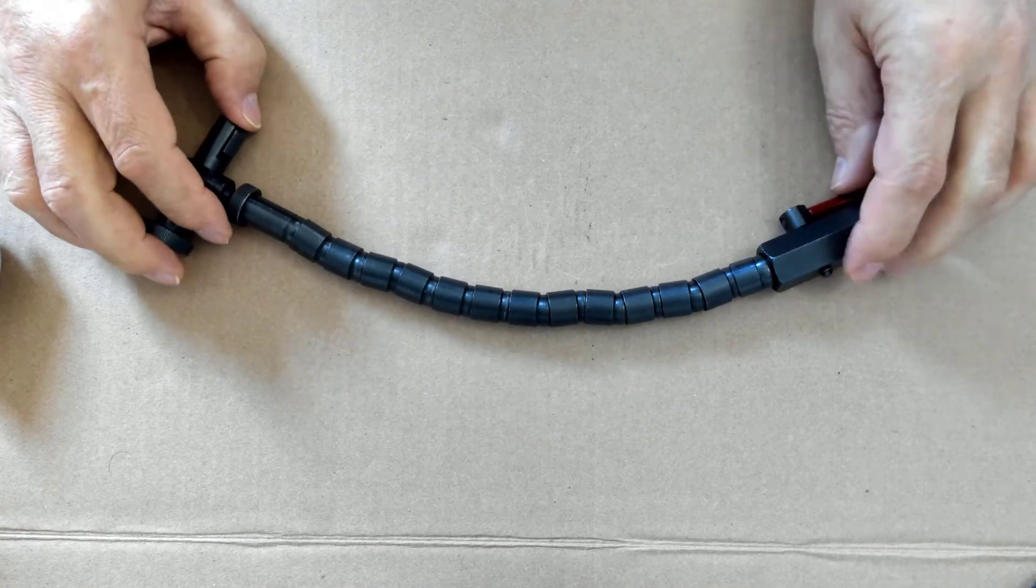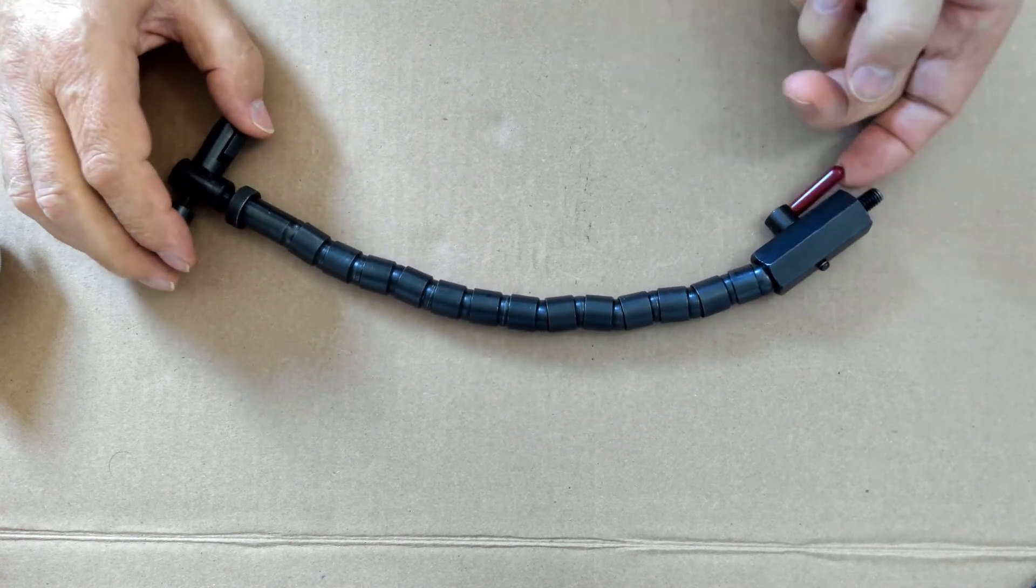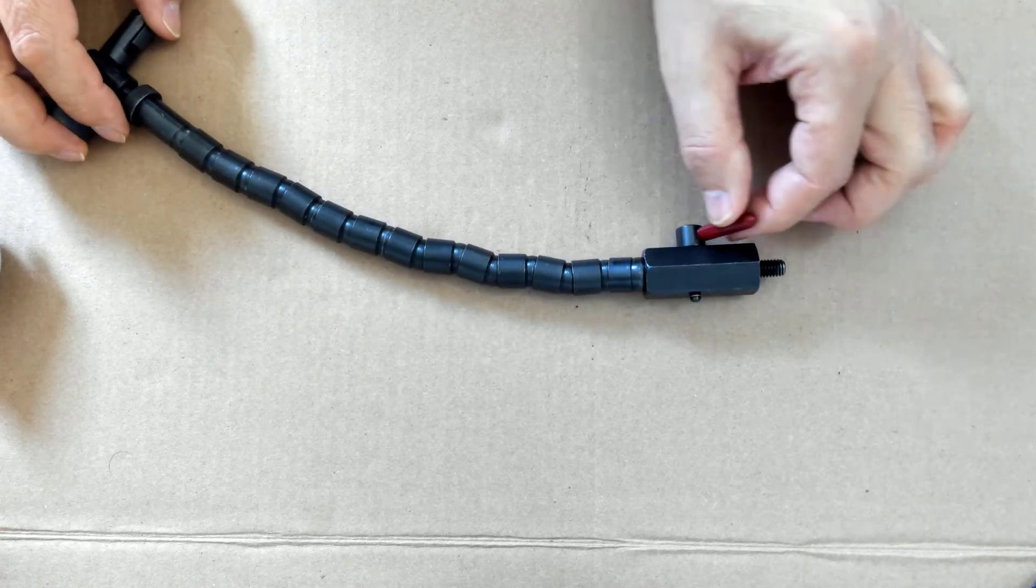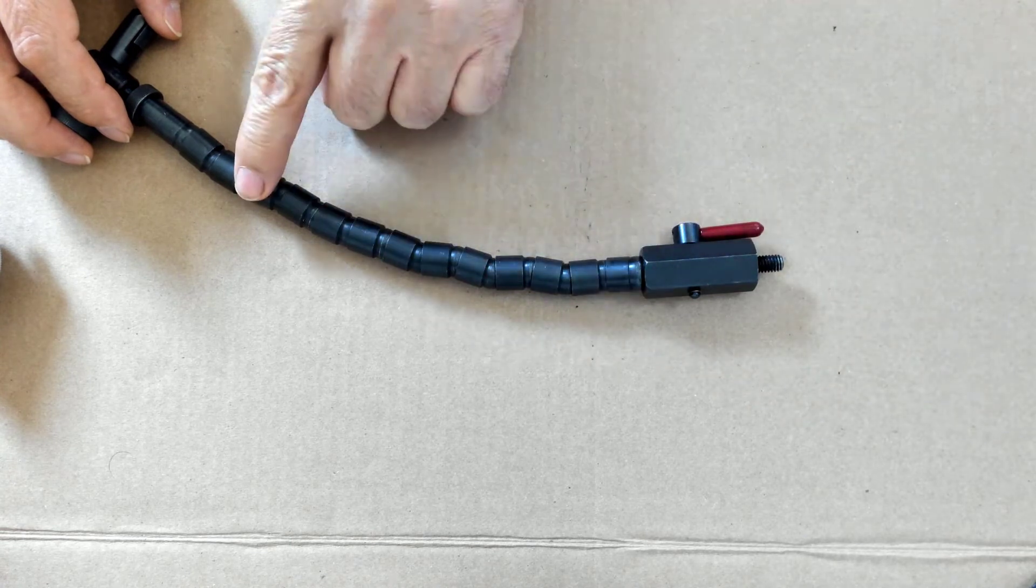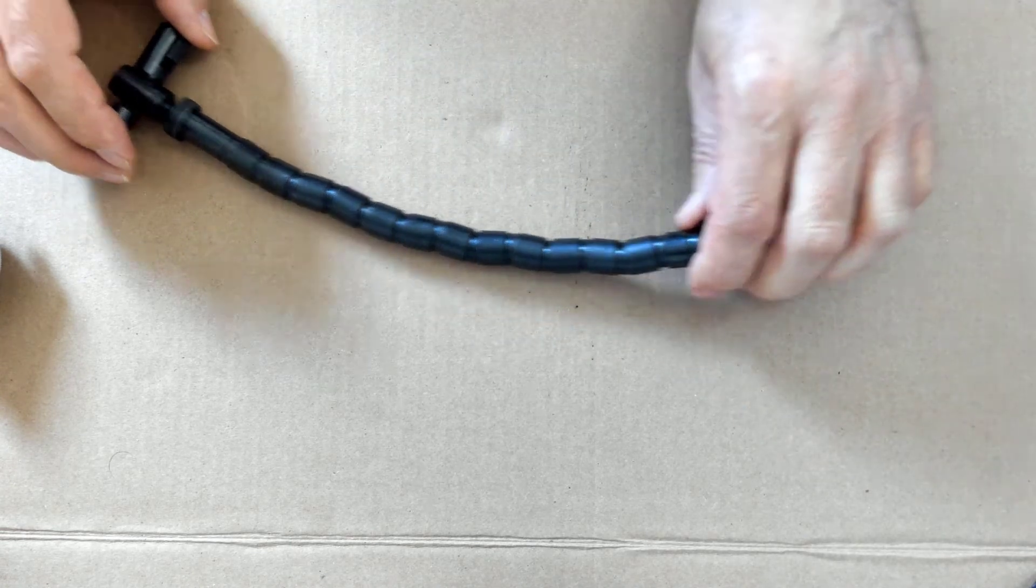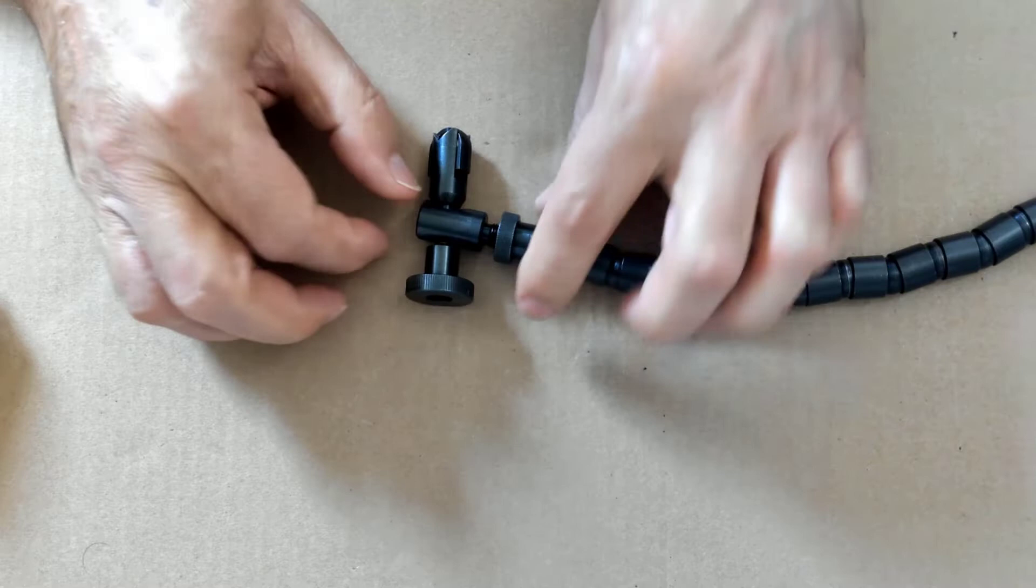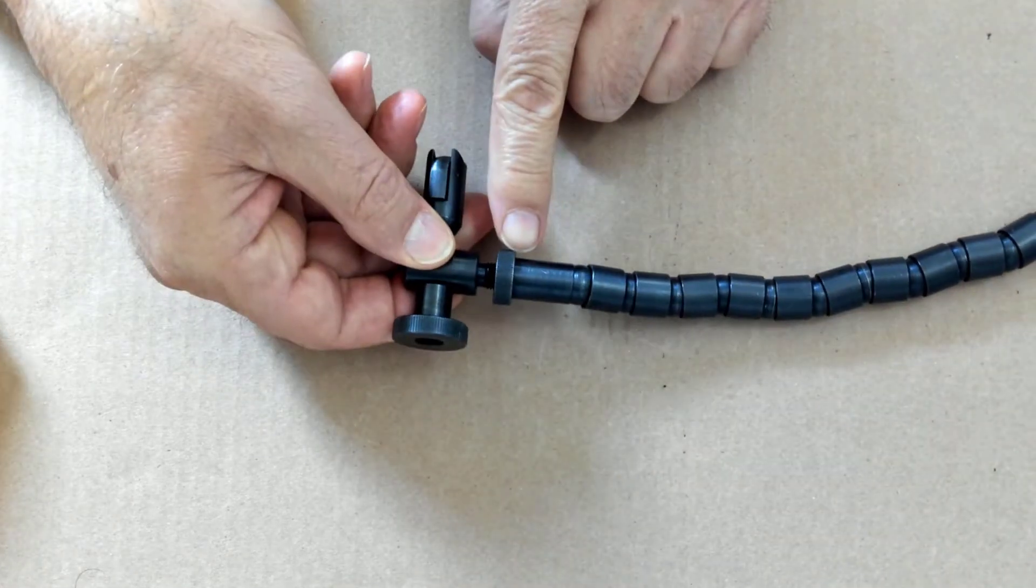The flexible snake has the ability to lock into place by using this lever down here. This is a cam locking mechanism and it pulls on a cable inside the flexible snake. There's an adjuster right here and this is how you adjust it.